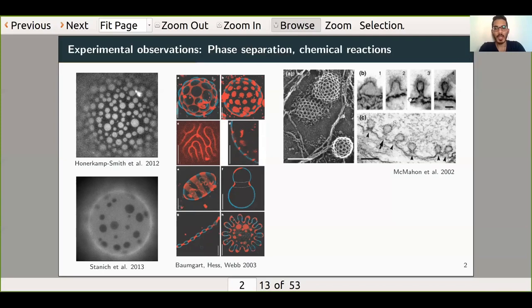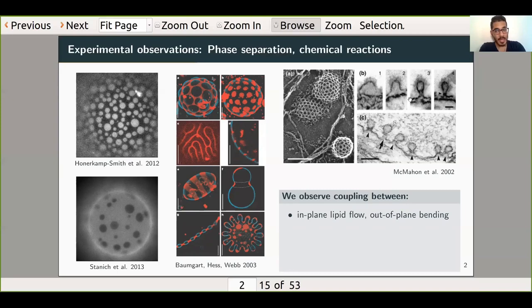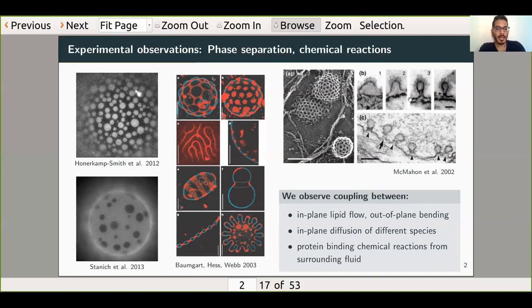We've seen in this slide, in the previous slides, there's an intricate coupling between various processes: namely the in-plane flow of lipid, the out-of-plane bending of the entire membrane, the phase separation that occurs, and chemical reactions with species in the surrounding fluid. One of the questions that we can ask is: how do we model such a system?